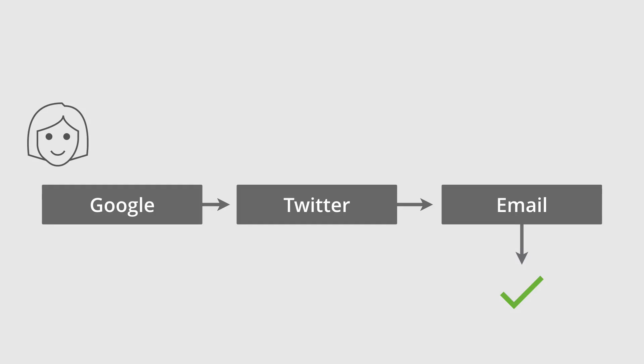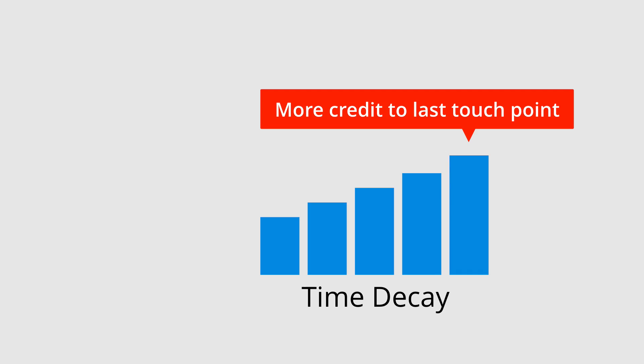Step number six is to look beyond the last click attribution model. Attribution is about how credit is given to your marketing channels when a conversion occurs. By moving beyond the last click attribution model, you can get a better understanding of how your campaigns perform. I recommend the time decay model as a good starting point. You can find attribution related reports by navigating to Conversions, then Multi-Channel Funnels, and you'll find the model comparison tool under Attribution. For even more on attribution, check out the resources in the description below this video.